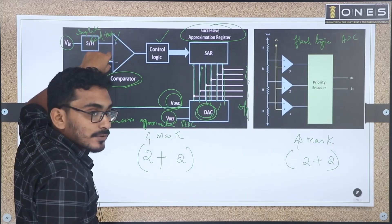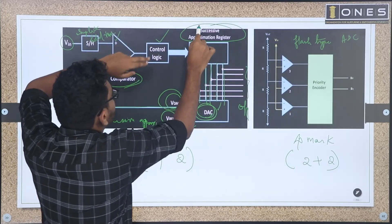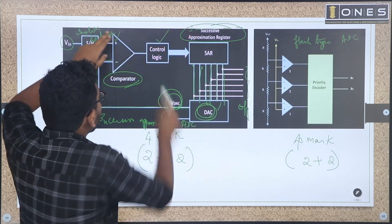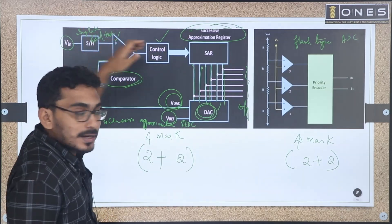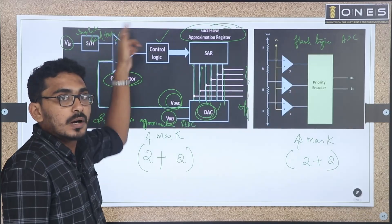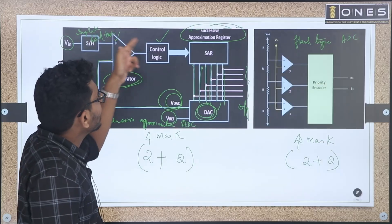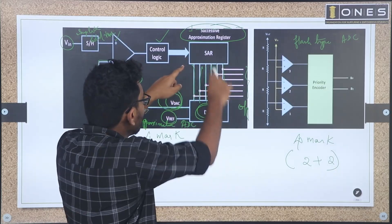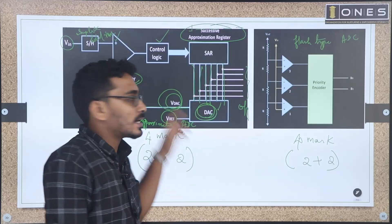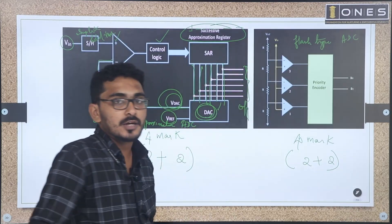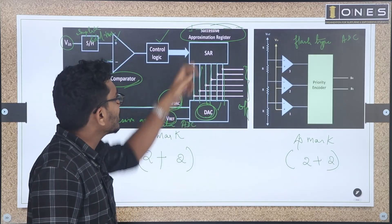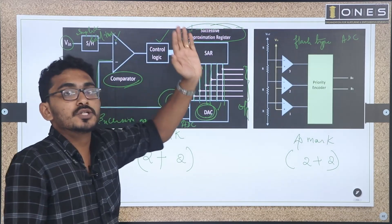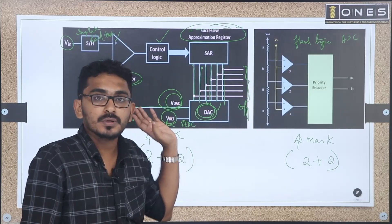The most significant bit is compared first — VIN is compared to the reference. If the input voltage is greater than VIN, it is set; if not, it is reset to 0. We store the values, compare them to the input voltage, and adjust the value successively. Finally, we convert the analog value to a digital output by reducing the approximation to reach the final value.